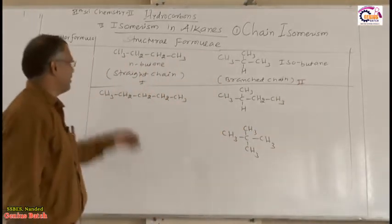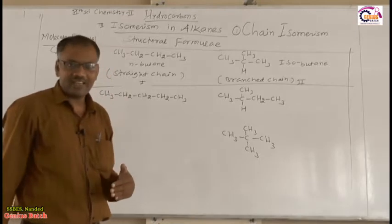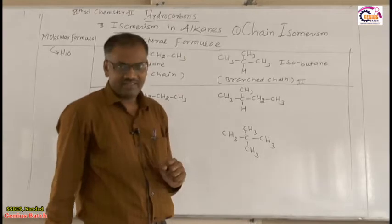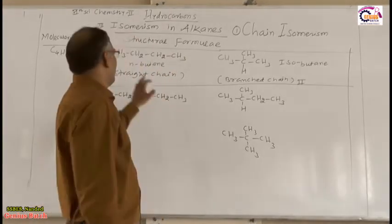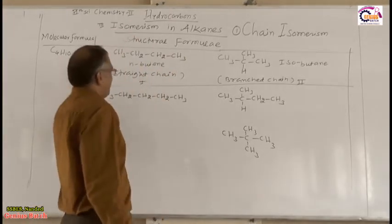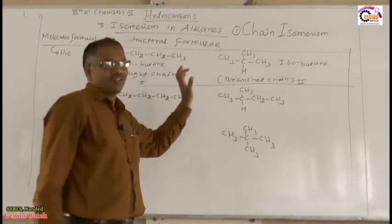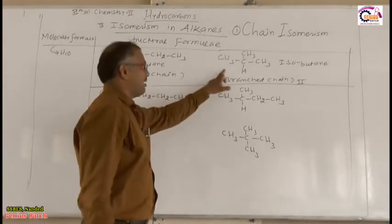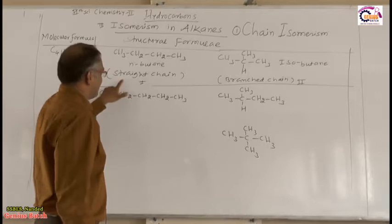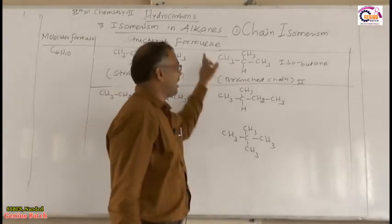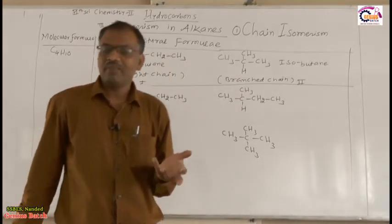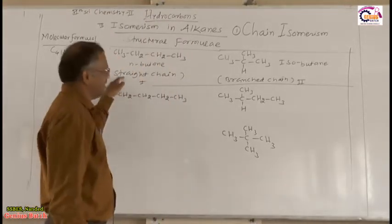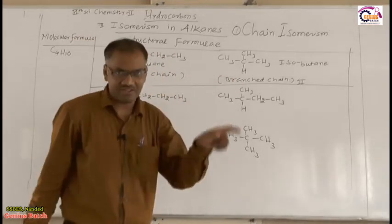In the first example, the nature of the chain of carbon atoms is straight chain. In the second example, the nature of the chain of carbon atoms is branched chain. This indicates that the compound having molecular formula C4H10 has two structures in which the carbon skeleton is different. Here the carbon skeleton is straight chain; here it is branched chain.